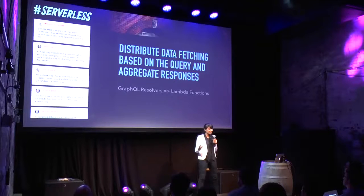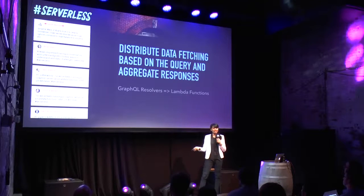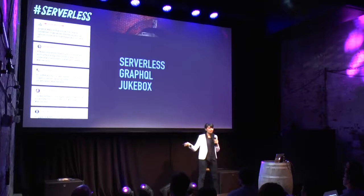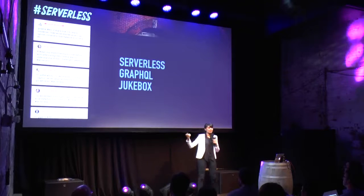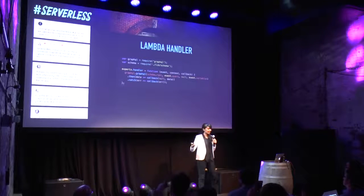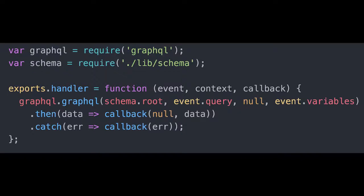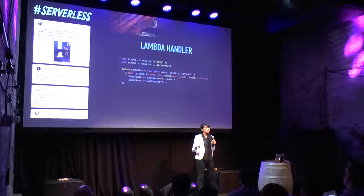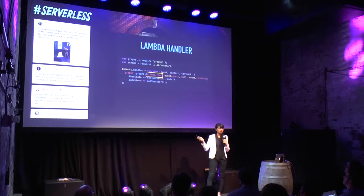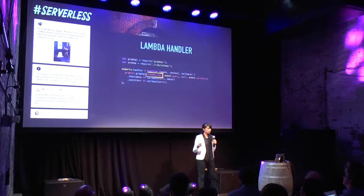Unfortunately I can't show you the GraphQL server we're using in production, but to give you an idea of what it looks like, I've built a serverless GraphQL jukebox to show you what a GraphQL API facade looks like. Starting at the handler for the Lambda function, the client sends a query and variables in the event object, and these are resolved against the schema which you have predefined. Here we're using the GraphQL npm module to actually carry out the query.